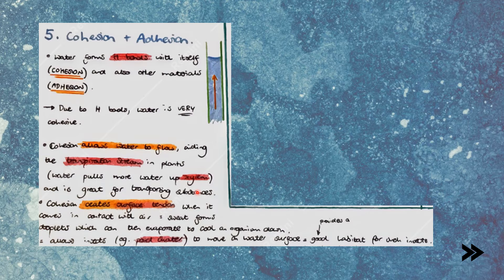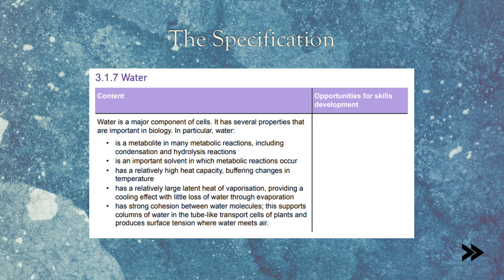Cohesion also means that water creates surface tension when in contact with air. This means that sweat forms droplets, which can then evaporate to cool an organism down. Surface tension also allows insects, such as the pond skater, to move on the surface of the water, which provides a good habitat for such insects. Great, so now we've covered all five reasons why water is important in biology.